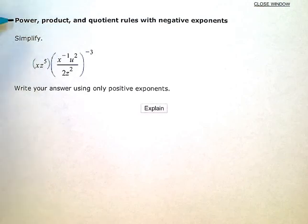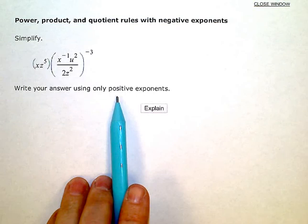Power, product, and quotient rules with negative exponents. Simplify. So I have a fairly complicated expression here with exponents. I want to simplify it, and I want my answer to only have positive exponents, no negative exponents.